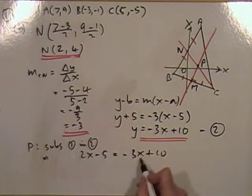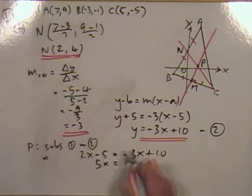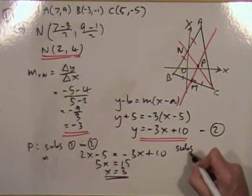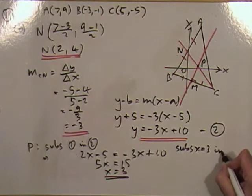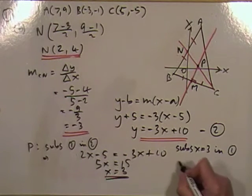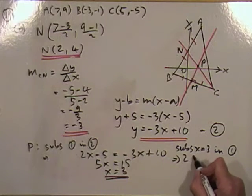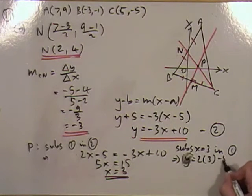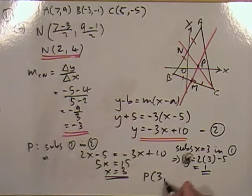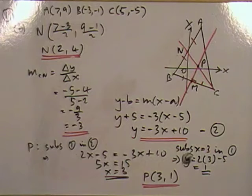Bringing terms over: 5x equals 15, so x equals 3. Then substitute x equals 3 back into equation 1 — that's the easier one. y equals 2 times 3 take away 5, which is 6 take away 5, which is 1. So the point of intersection is the point 3, 1. Nice easy 10 marks to start with.